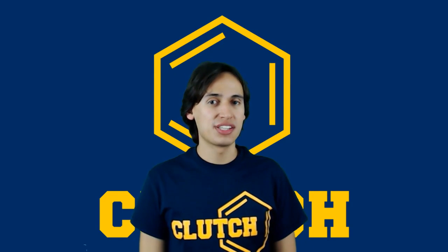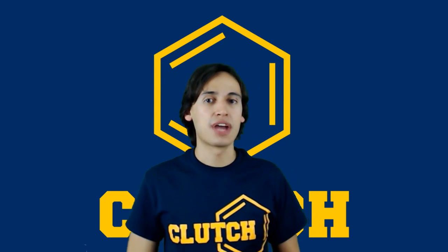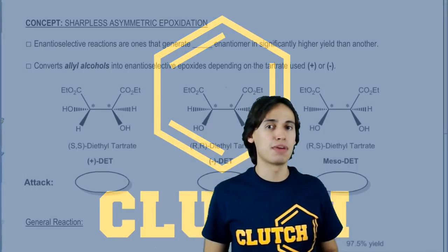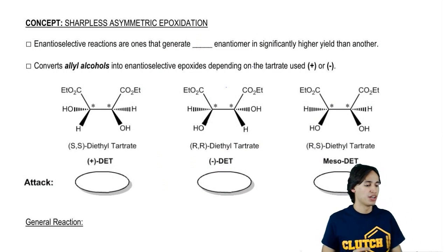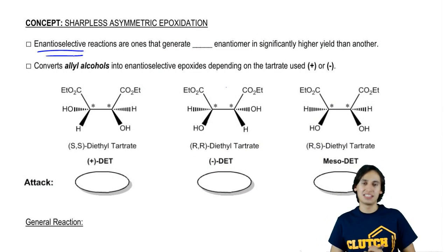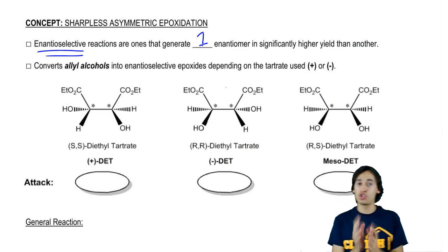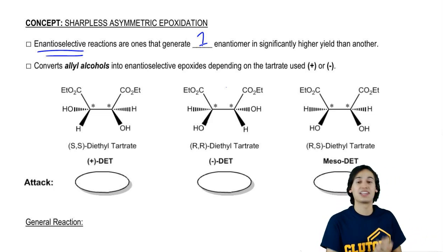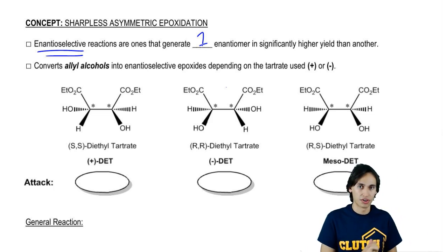So now I want to talk about a form of epoxidation that has some pretty interesting advantages. The name of this reaction is the Sharpless Asymmetric Epoxidation. The whole point of this reaction is that it's a form of epoxidation that is enantioselective. What that means is that it's going to generate only one of the two possible enantiomers in excess. In fact, it's almost going to perfectly select one enantiomer over another.